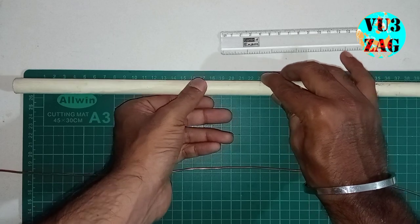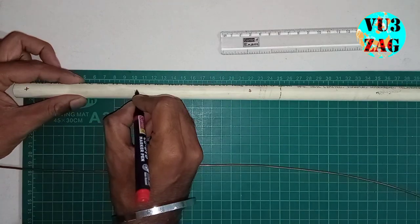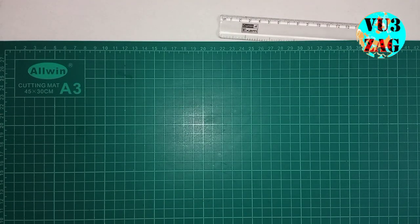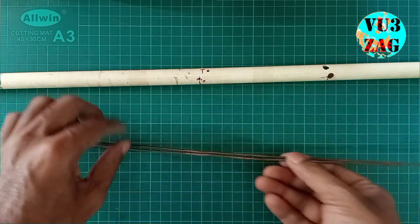First of all we have to mark the positions for drilling the holes on the PVC tube according to the calculator. Then we have to drill holes in such a way that we can insert the copper rod through the PVC pipe.